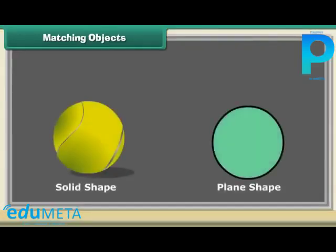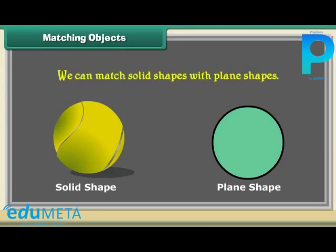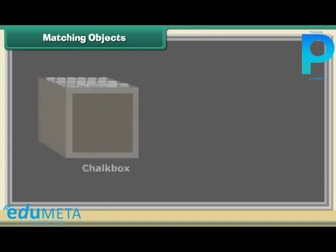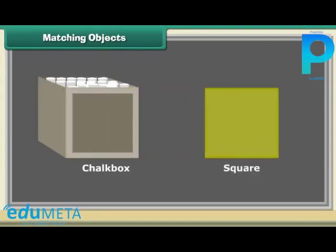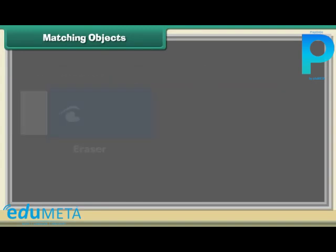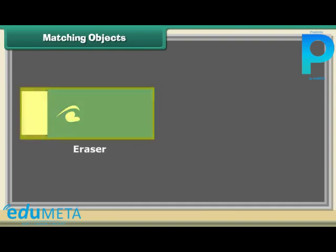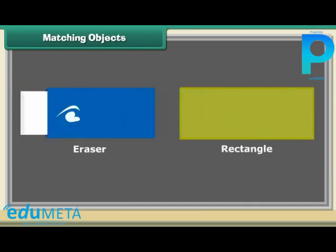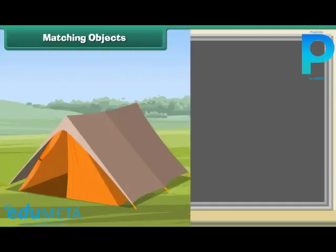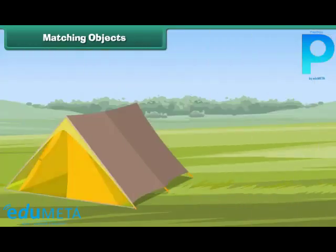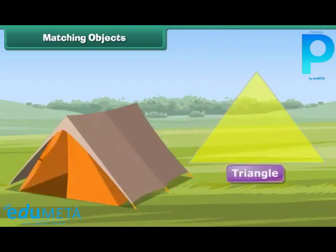Matching objects: we can match solid shapes with plain shapes. We can match a chalk box with a square. We can match an eraser with a rectangle. We can match a ball with a circle.